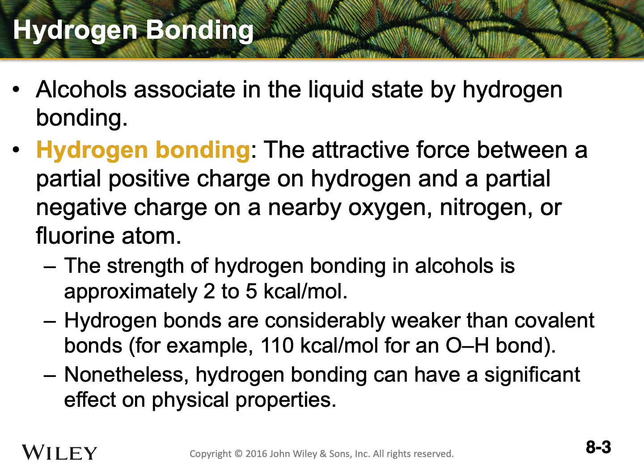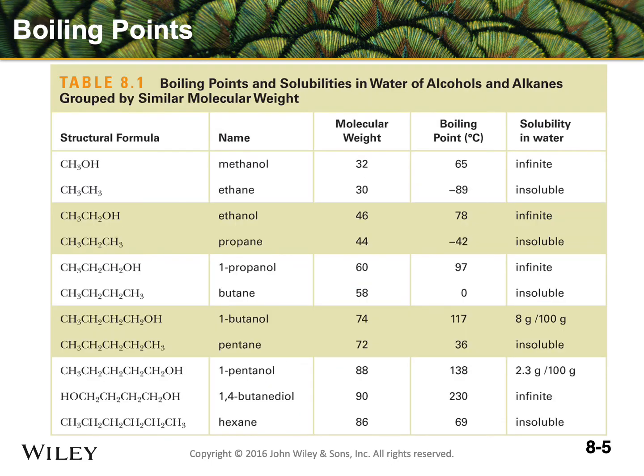Hydrogen bonding is an attractive force between the partially positive charge on hydrogen and the partially negative charge on a nearby oxygen, nitrogen, or fluorine atom. While it's not a very strong bond — in fact it's only about 2 to 5 kcal per mole, and considerably weaker than covalent bonds, which are roughly 20 times stronger — this bonding does have a significant effect on physical properties.